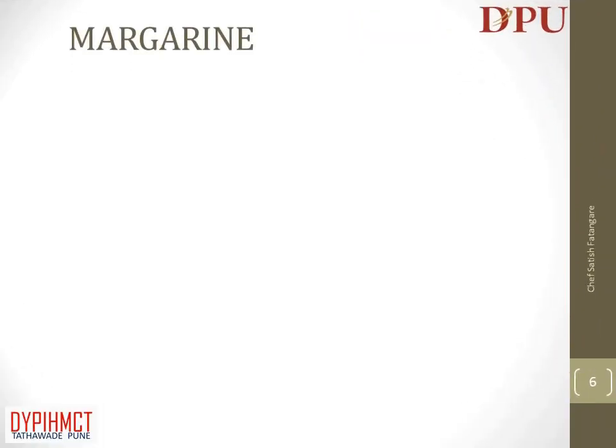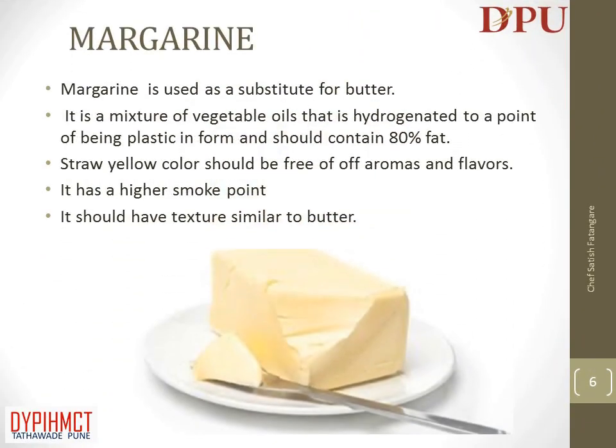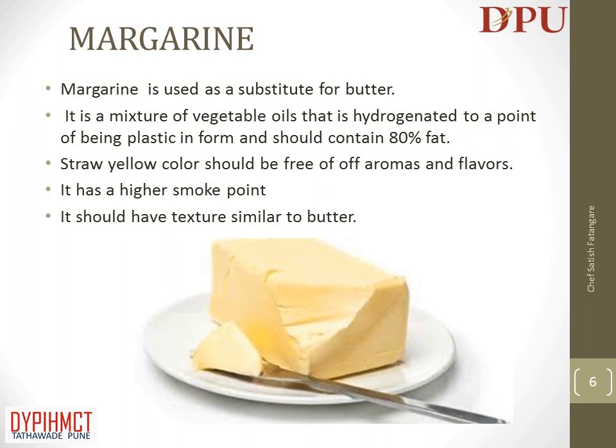In this slide we will discuss about margarine. Margarine is used as a substitute for butter. It is a mixture of vegetable oils that is hydrogenated to a point of being plastic in form and should contain 80% fat. It has a straw yellow color, should be free of off aromas and flavors, has a higher smoke point, and should have a texture similar to butter.